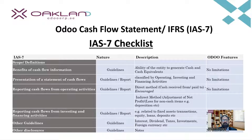Next, we have cash flows from investing and financing activities. Here we mainly see cash flows related to buying assets, or related to equity, loans, and deposits. These are the areas where IAS 7 provides guidelines, and the content of the report is also explained.